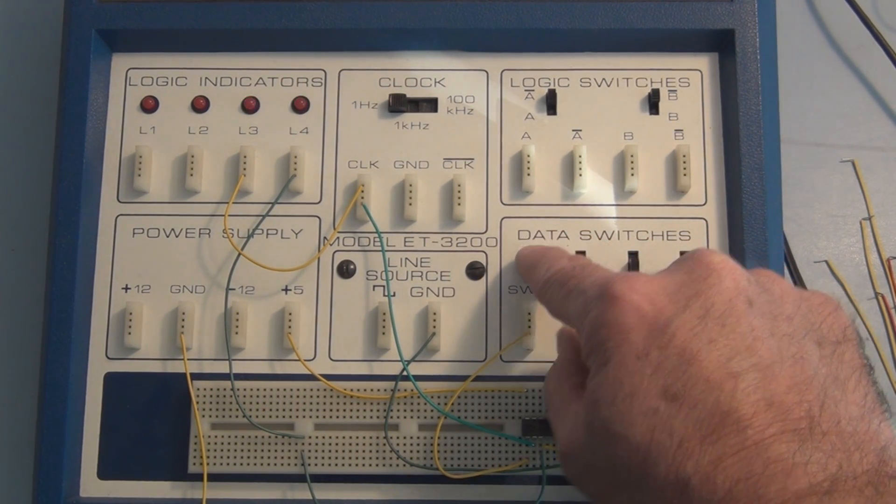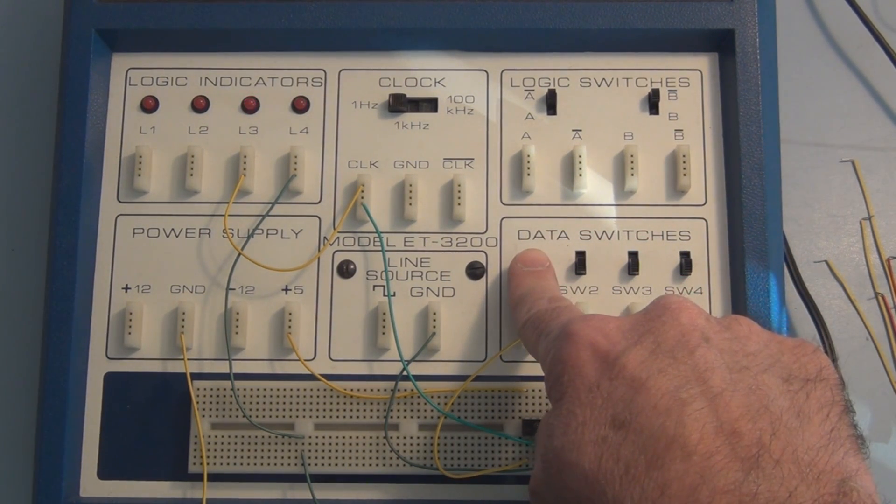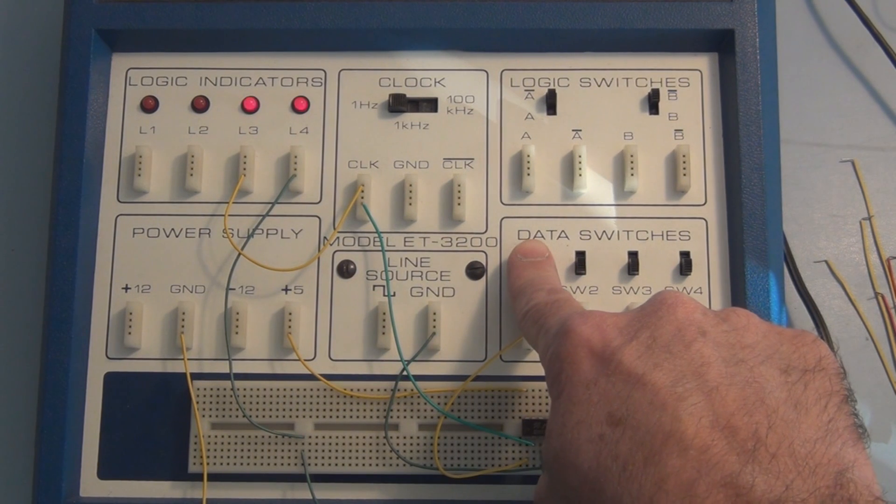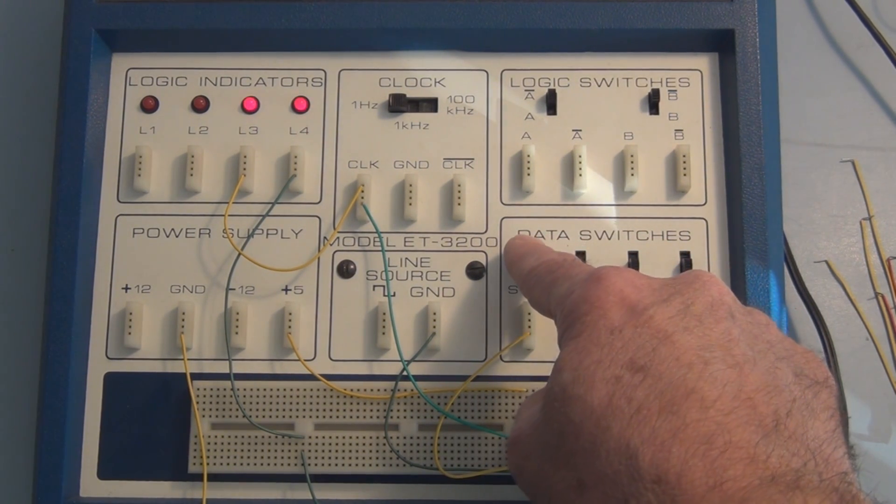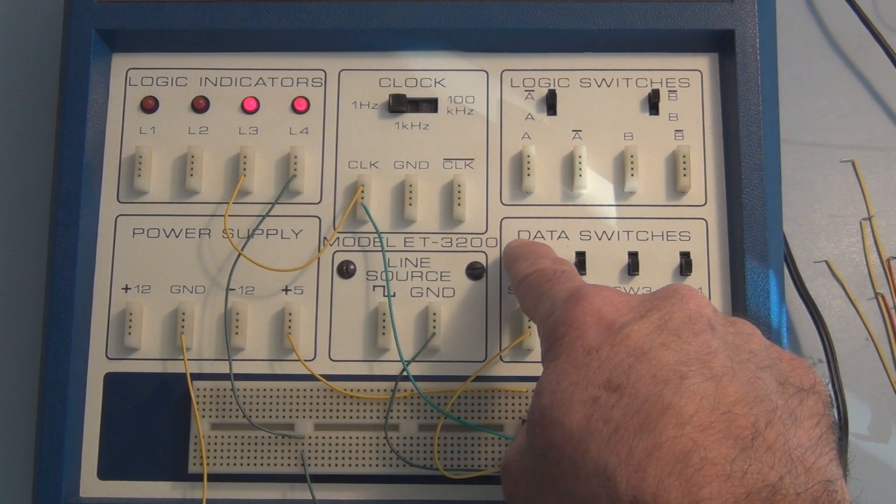So in essence, I can turn off that square wave from reaching the output by applying a one or a zero to one of the AND gate inputs.